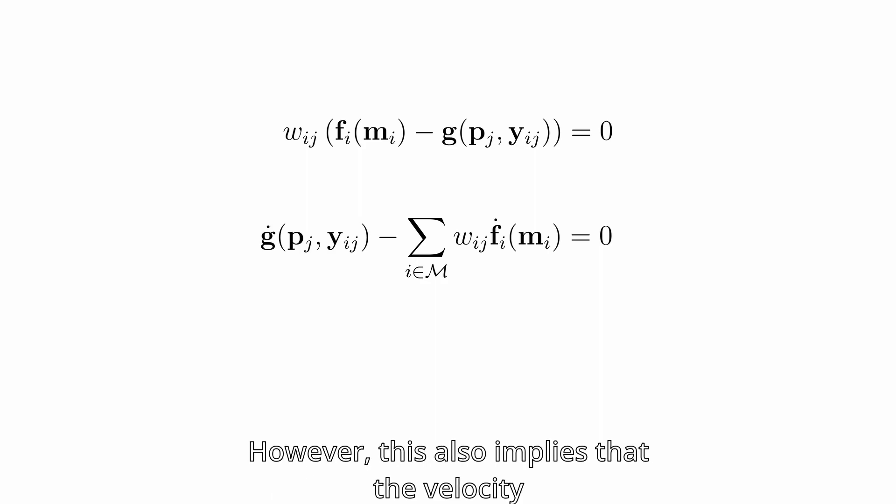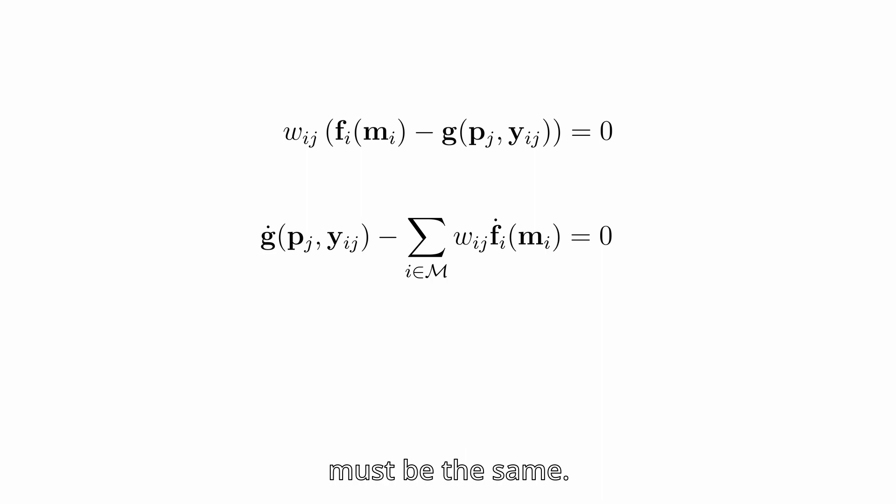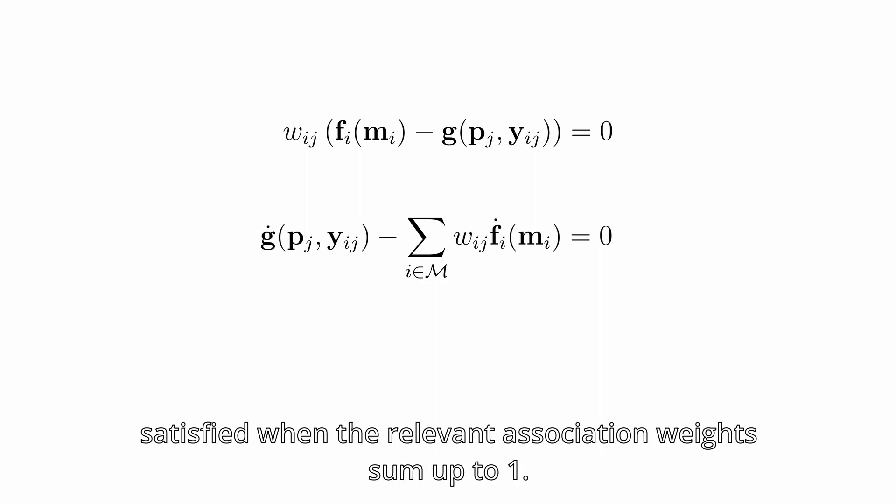However, this also implies that the velocity of the end effector and the object must be the same. Therefore, when both velocities are non-zero, the velocity constraint can only be satisfied when the relevant association weights sum up to 1.